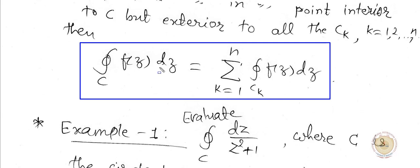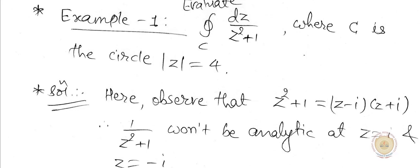For example, consider the problem: integration over C of dz divided by (z² + 1), where C is the circle |z| = 4. To start, first draw the curve of this circle |z| = 4. Next, focus on the singularities of this function.